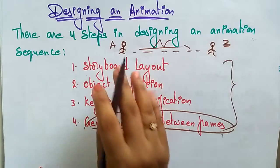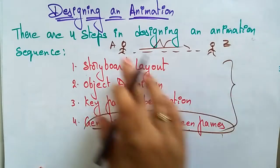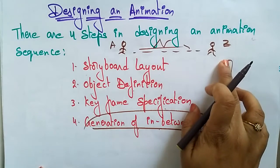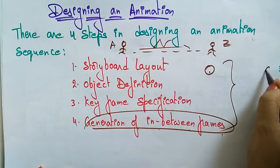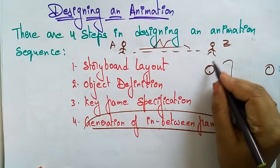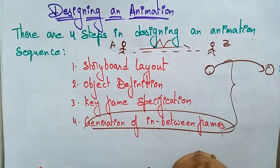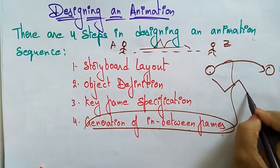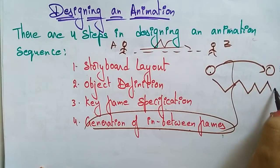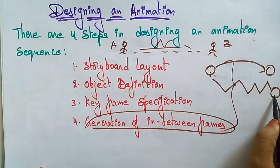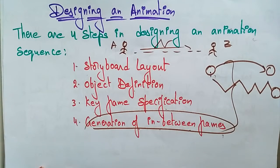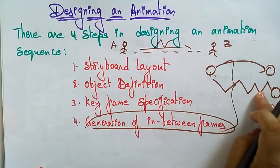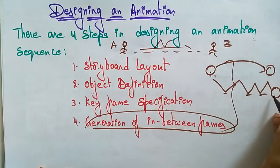For example, the storyboard layout: this object, a ball, has to move to a target position. I'm bouncing the ball. The story layout shows the ball starting, bouncing step by step — first step, second step, third step, fourth step — until it finally reaches the destination. That is the storyboard layout.